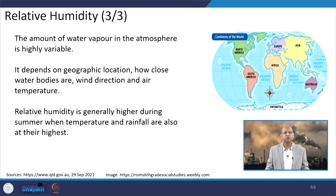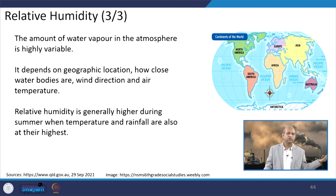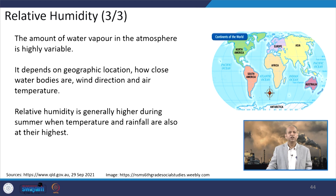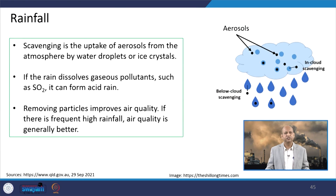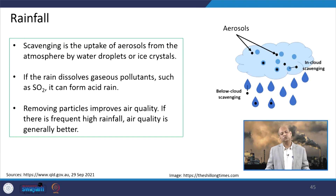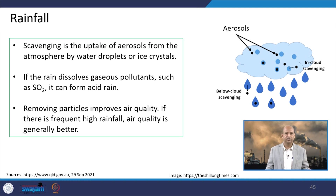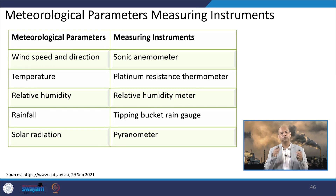The amount of water vapor in the atmosphere is highly variable depending upon location and solar radiation. It depends upon geographical location, how close it is to water bodies, wind direction, wind speed, and temperature. Relative humidity is generally higher during summer when temperature is higher, since warmer air can hold more water. Rainfall helps in wet deposition — with precipitation, aerosols come down, and even gaseous pollutants come down in the form of acid rain, so removal of particles improves air quality and cleans the atmosphere.